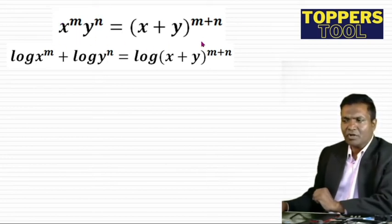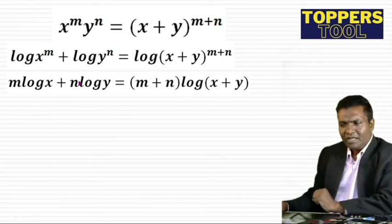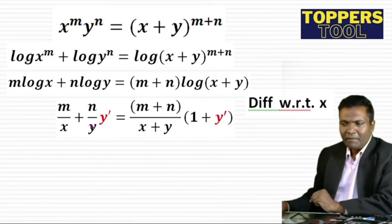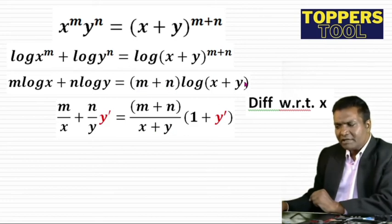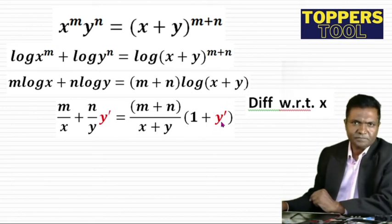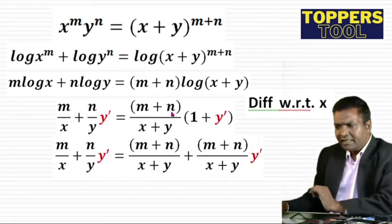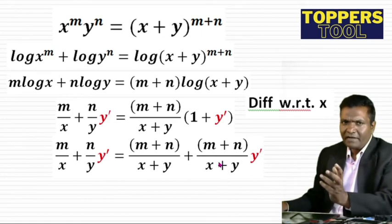Taking log of both sides: m·log x + n·log y = (m+n)·log(x+y). Differentiating with respect to x: m/x + (n/y)·(dy/dx) = (m+n)·[1/(x+y)]·(1 + dy/dx). Now collect the dy/dx terms: bring terms with dy/dx to one side and the rest to the other.